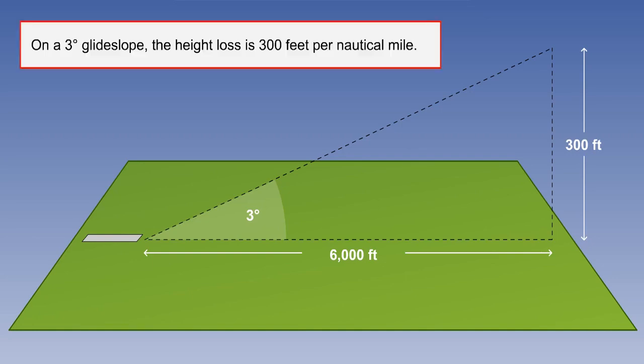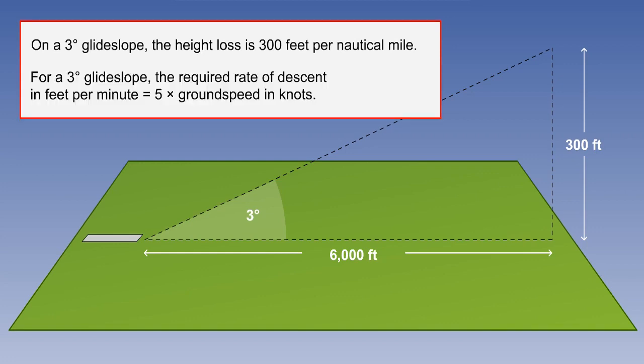6,000 feet is a reasonable approximation of a nautical mile. Therefore, on a 3 degree glide slope, the height loss required will be 300 feet per nautical mile. An aircraft with a ground speed of 60 knots would take 1 minute to travel 1 nautical mile. Therefore, the required rate of descent to be indicated on the VSI will be 300 feet per minute. A simple formula to remember is for a 3 degree glide slope, the required rate of descent in feet per minute equals 5 times the ground speed in knots.